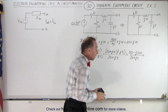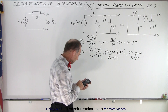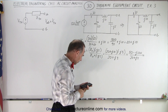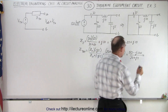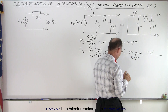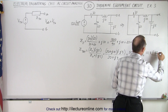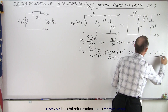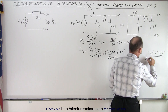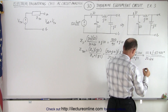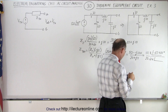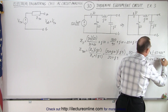Now we need to convert to magnitude and phase angle format. The numerator magnitude: square root of 10000 plus 2500 equals 111.8, with a phase angle of negative inverse tangent of 100 over 50, which is minus 63.435 degrees. The denominator: square root of 425 equals 20.616, with a phase angle of inverse tangent of 5 over 20, which is 14.036 degrees.